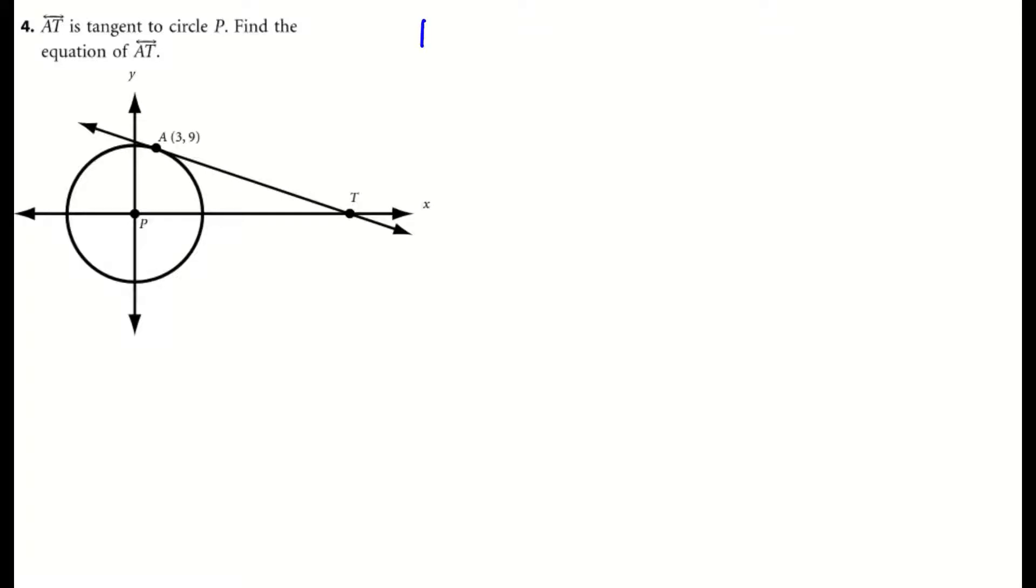All right, so this is problem number four in section 9.1. A few things to take into consideration when completing this problem: the radius is perpendicular to a tangent line, meaning that they intersect at 90 degree angles.